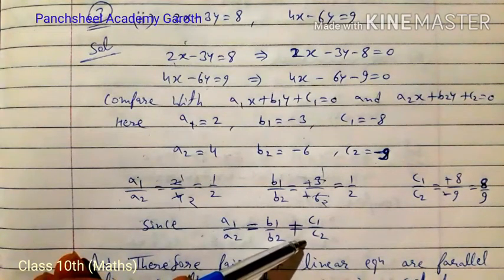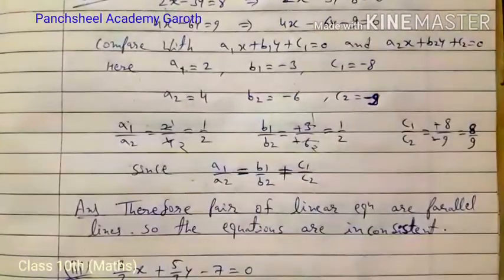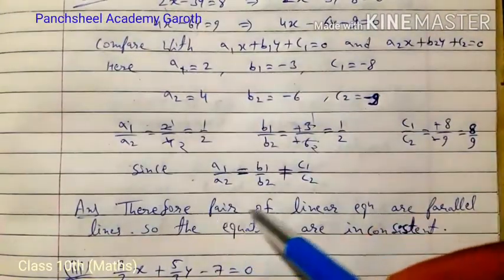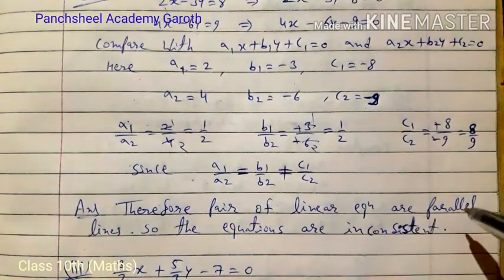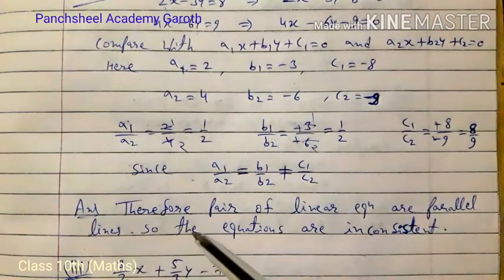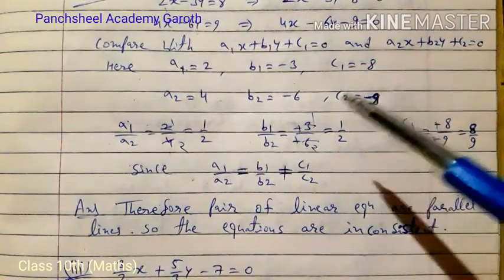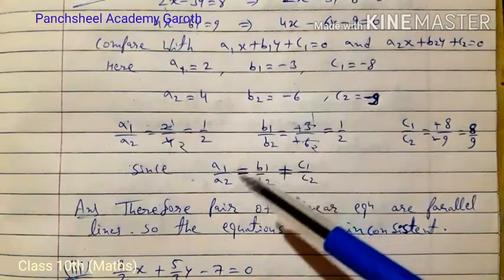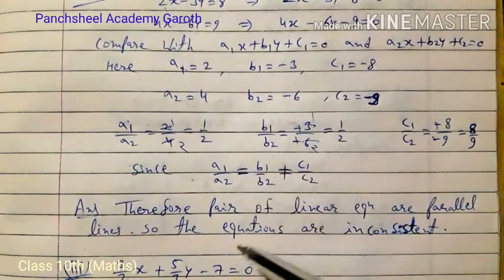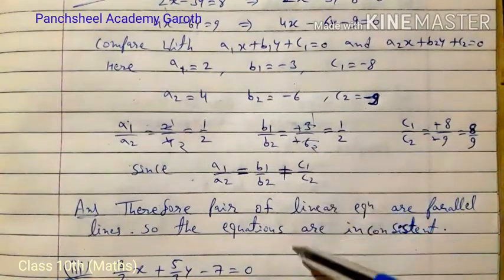When the first two ratios are equal but the third is not, the graph gives parallel lines. Therefore, the pair of linear equations are parallel lines, meaning there is no solution. So the system is inconsistent.